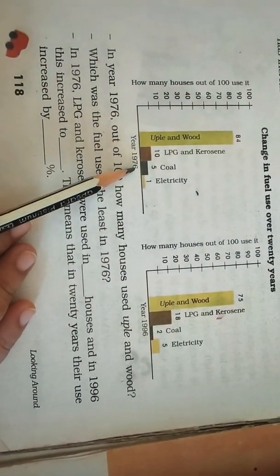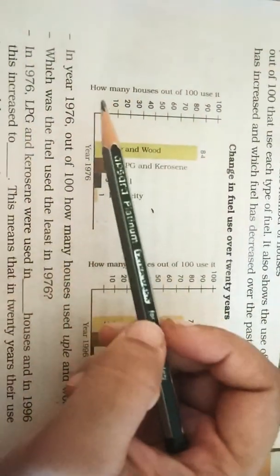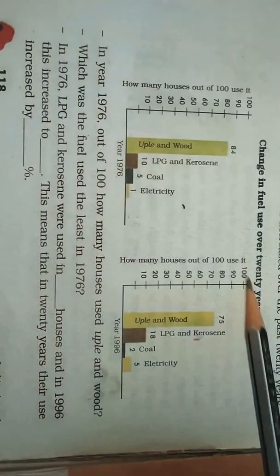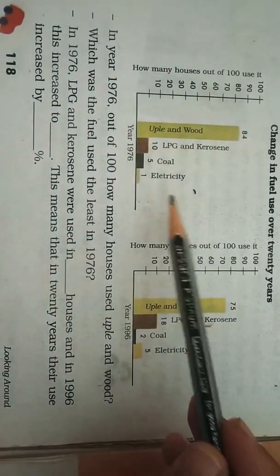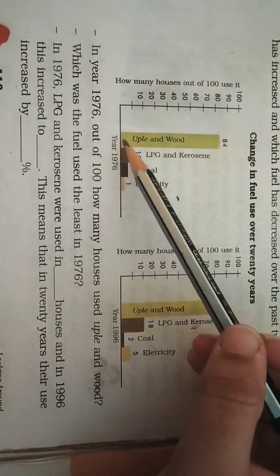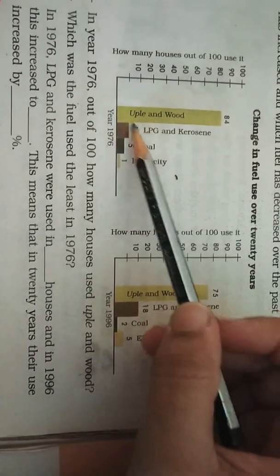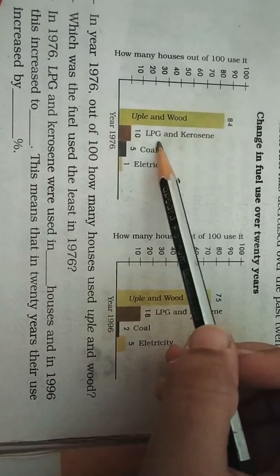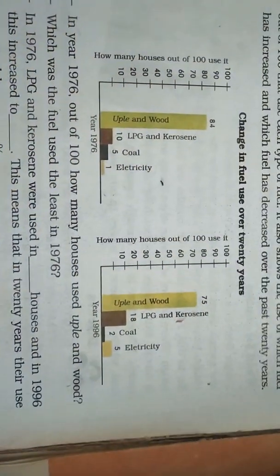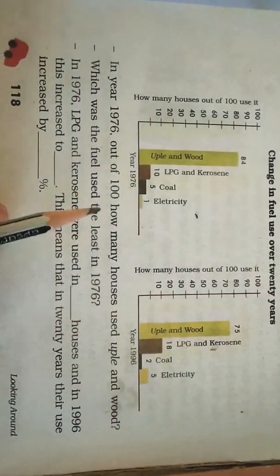This graph is for the year 1976 and this is for the year 1996. It shows how many houses out of hundred use certain fuels — both years have a sample of 100 houses, with a 20 year gap. The fuels listed are: firewood, LPG, kerosene, coal, and electricity. We will see how the use of these fuels has changed over 20 years.